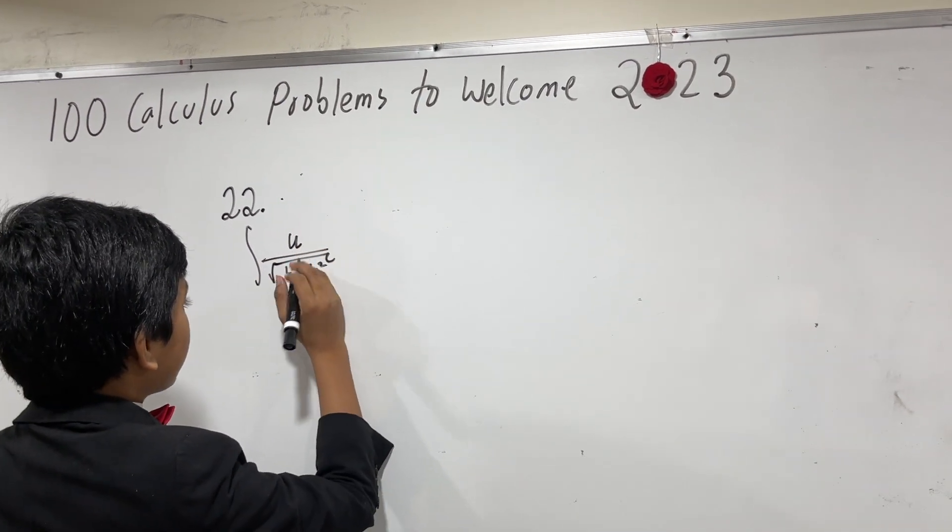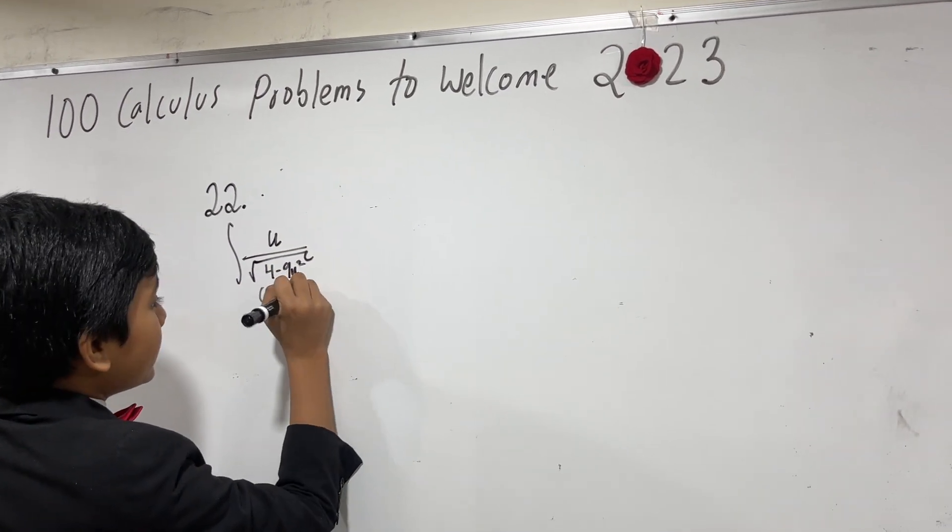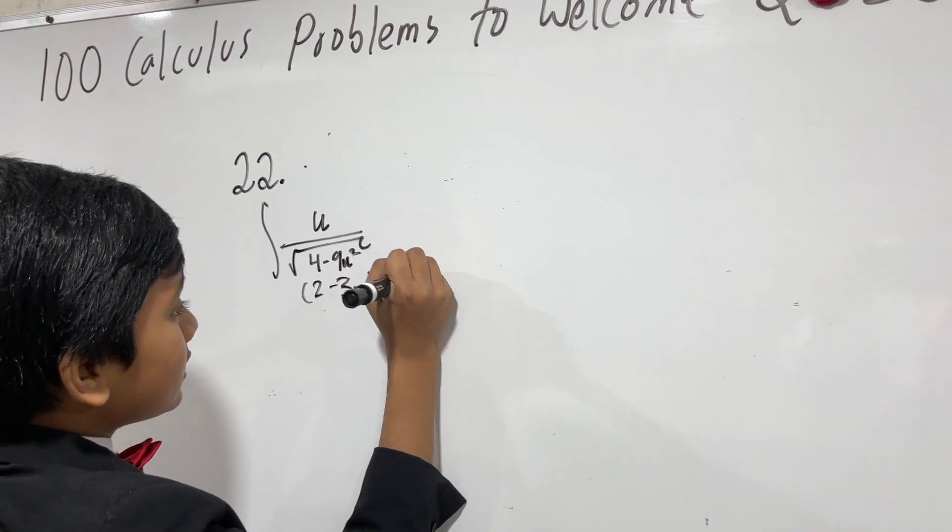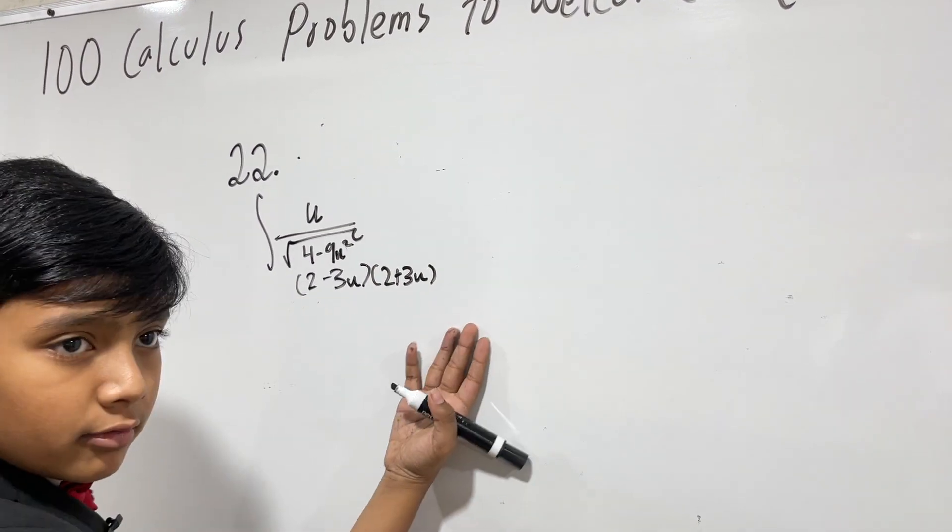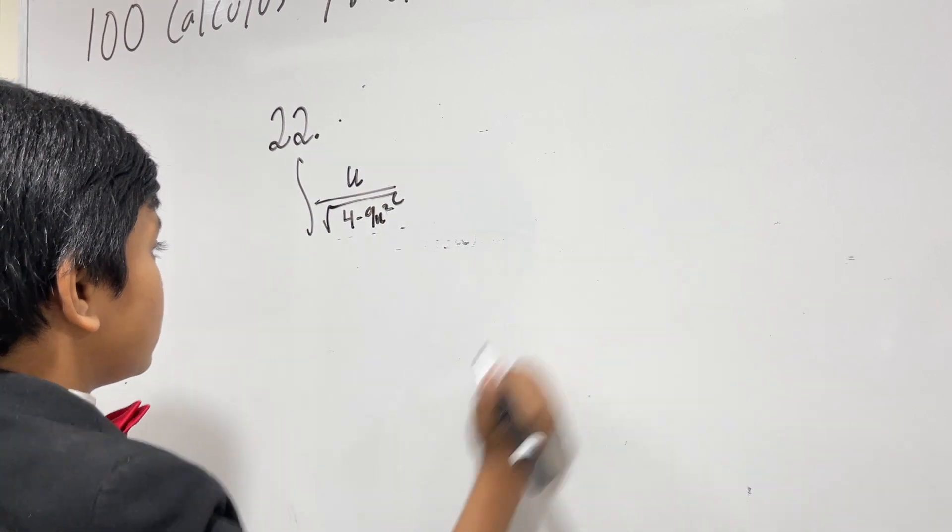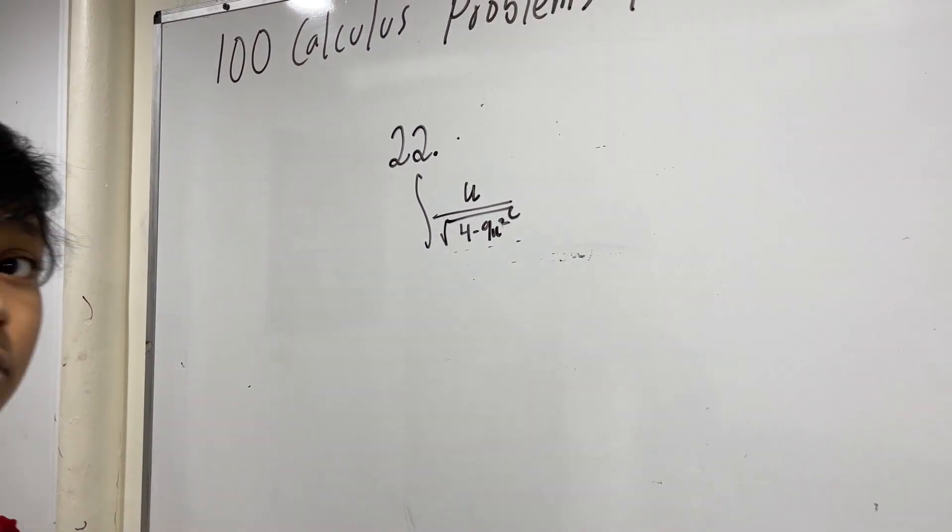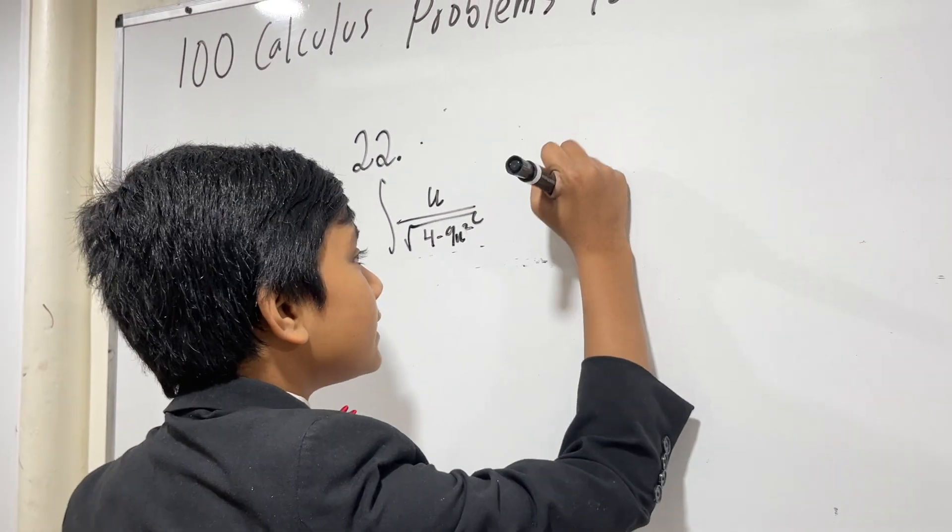This looks like a difference of squares, and sure enough, it is a difference of squares, but that doesn't really help you, because you can't square root a difference of squares. So, what can we do here? Well, it's actually a v sub.